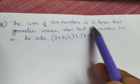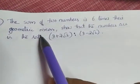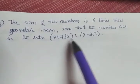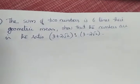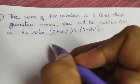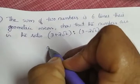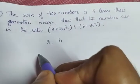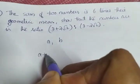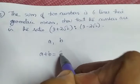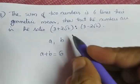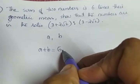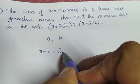The sum of 2 numbers is 6 times their geometric mean. Show that the numbers are in the ratio 3 plus 2 root 2 is to 3 minus 2 root 2. We will take the numbers as A and B. Sum of 2 numbers means A plus B is equal to 6 times their geometric mean. 6 times their geometric mean is 6 into root of AB.